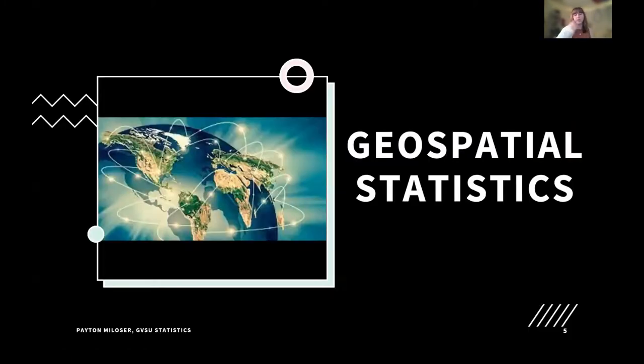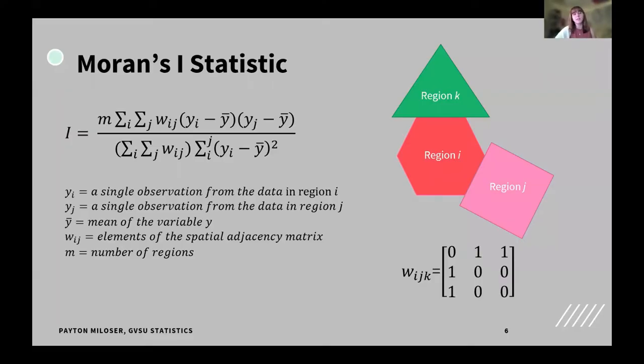Using that we can look at geospatial statistics. When we look at geospatial statistics, all this means is that we're taking what we already know about statistics and applying it to geographical applications. In this case, I specifically am looking at the Moran's i statistic.